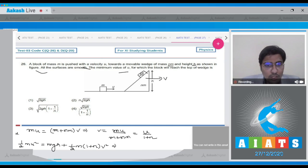From this, if we substitute the value of v as u by 1 plus n, we can write down that u square is equal to 2gh plus u square by 1 plus n. And on solving, we will get a value of u to be equal to under root 2gh times 1 plus 1 by n.